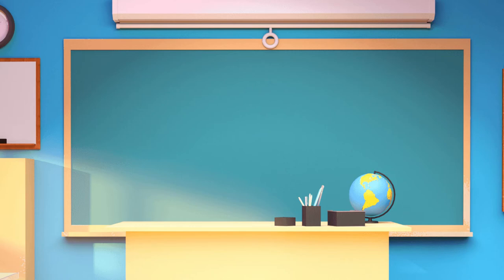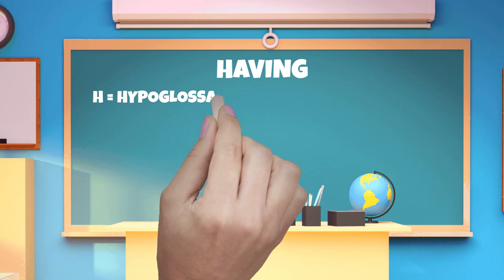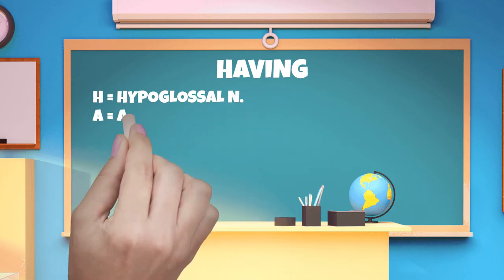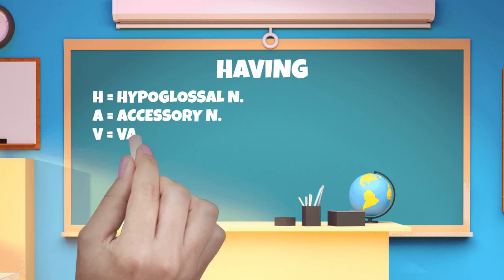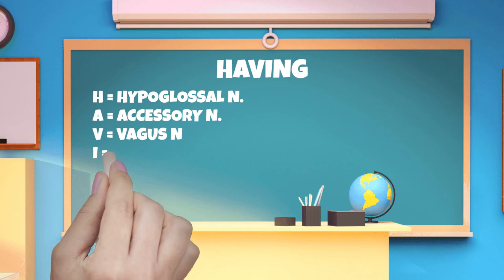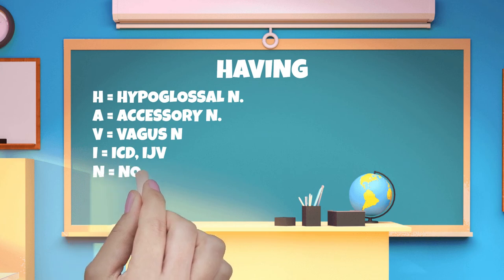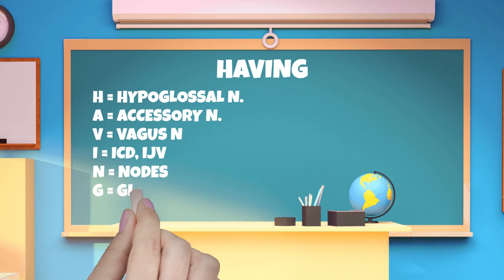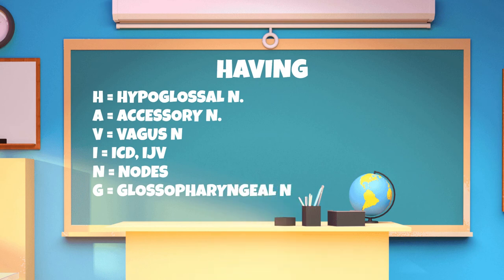What are the contents of the crottage sheath and how can you remember? Well, if you remember a mnemonic called HAVING — H equals the hypoglossal nerve, A equals the accessory nerve, V equals the vagus nerve. In the upper part of the crottage sheath, this contains the glossopharyngeal nerve, the accessory nerve, and the hypoglossal nerve. I equals the internal crottage artery and the internal jugular vein, N is nodes that includes the cervical chain C1, C2, and C3, and G equals the glossopharyngeal nerve.